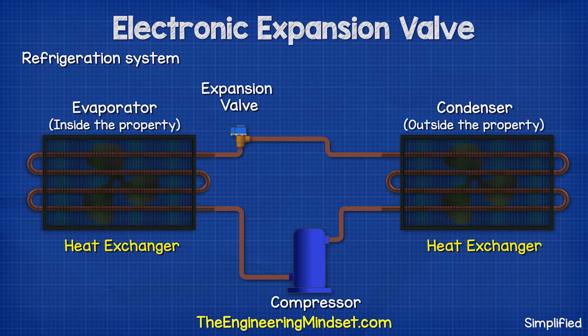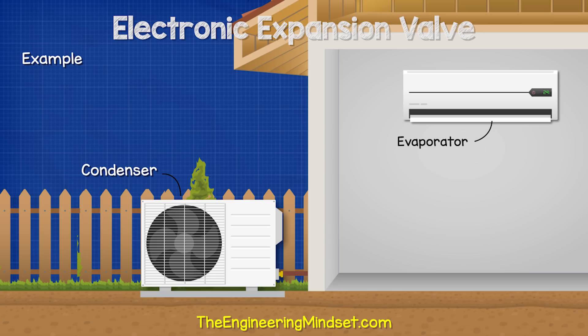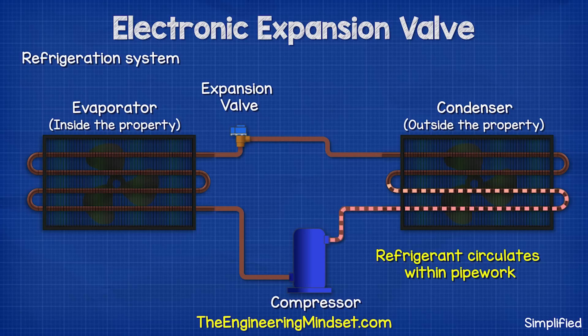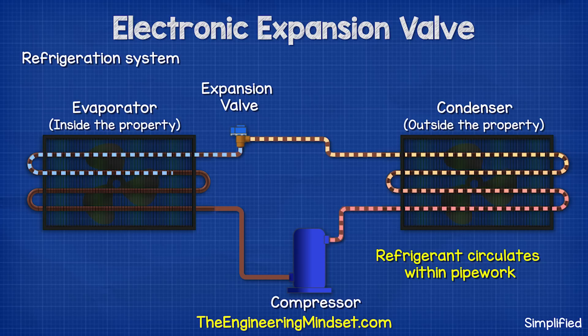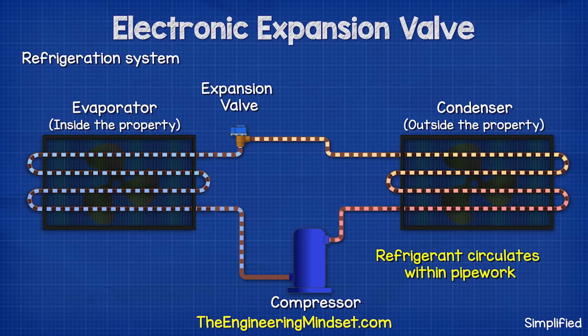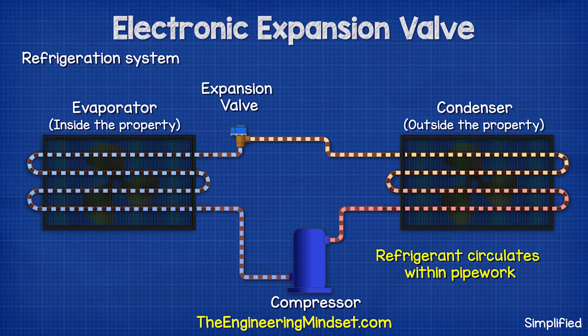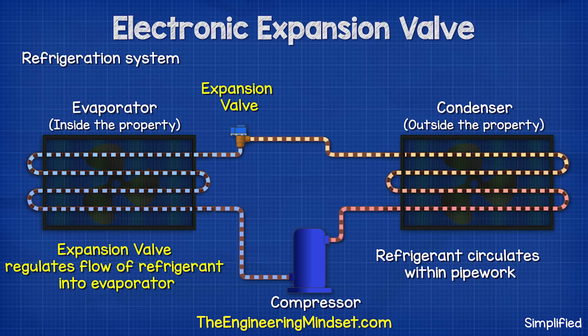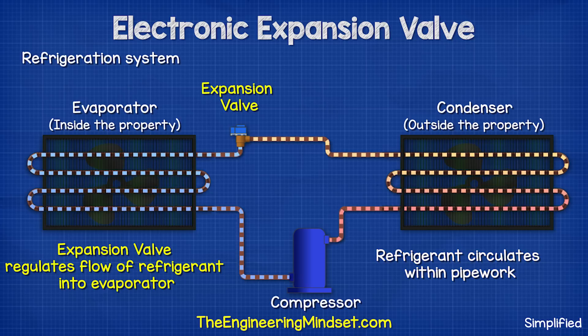The condenser and the evaporator are both heat exchangers. The condenser sits outside the property and the evaporator sits inside the room being cooled. The compressor circulates a refrigerant in the pipework which cycles between all of these components. The expansion valve regulates the flow of refrigerant.